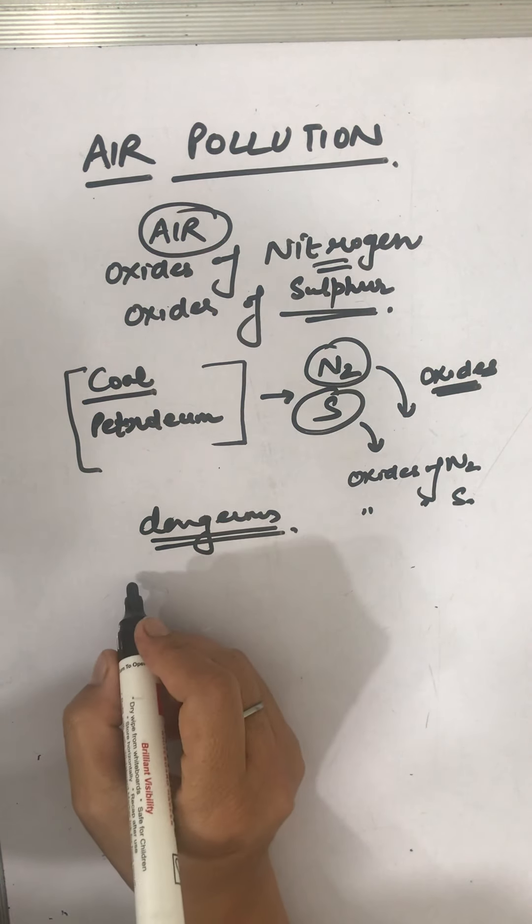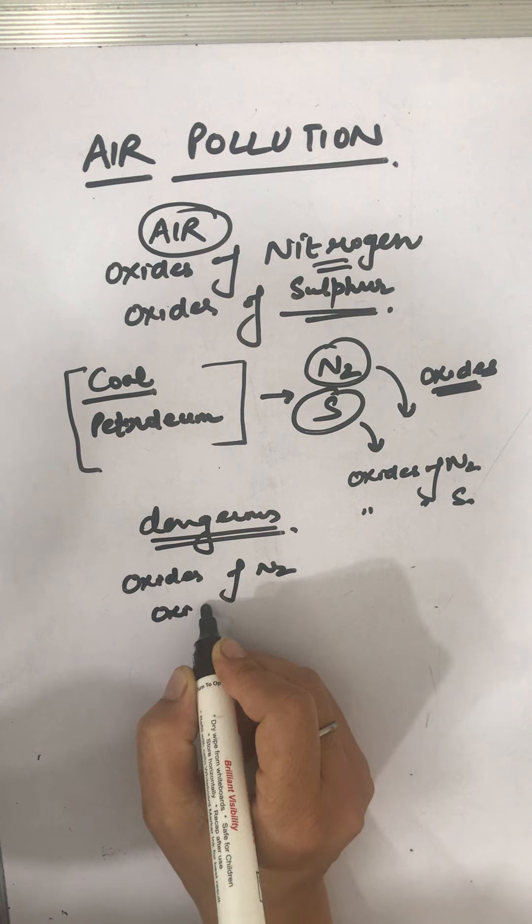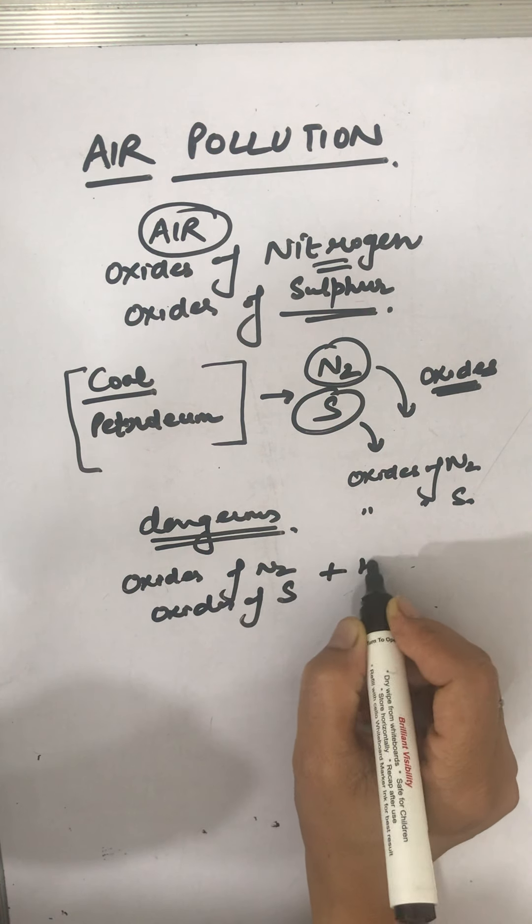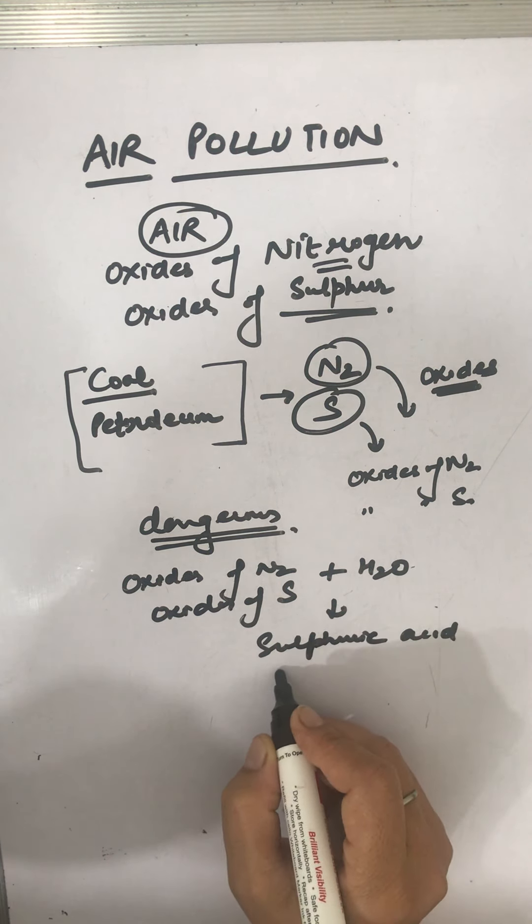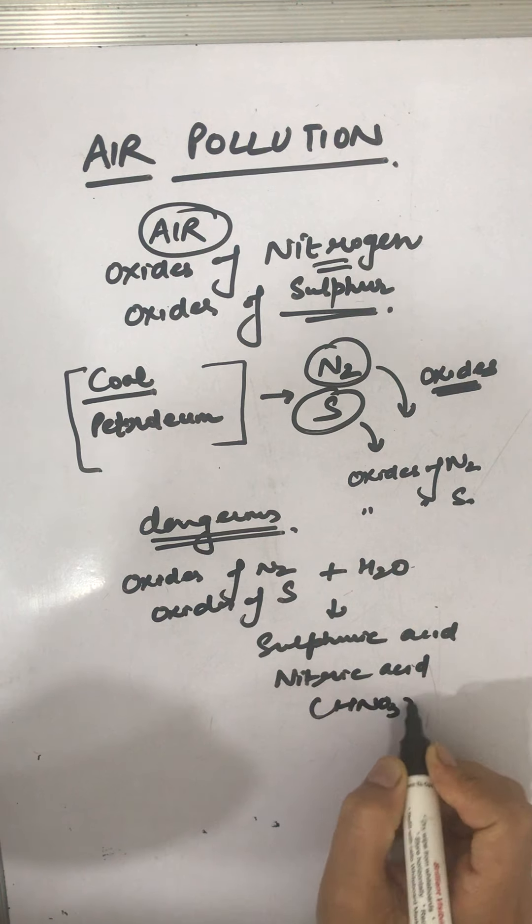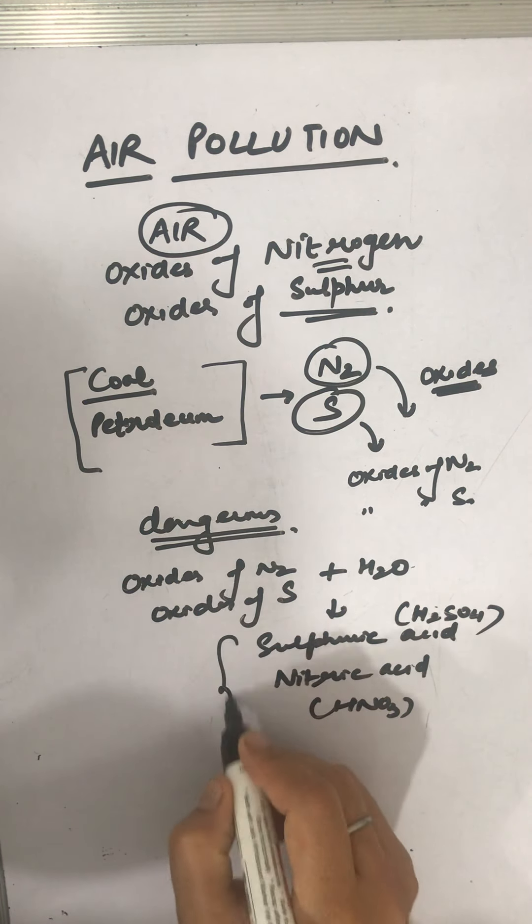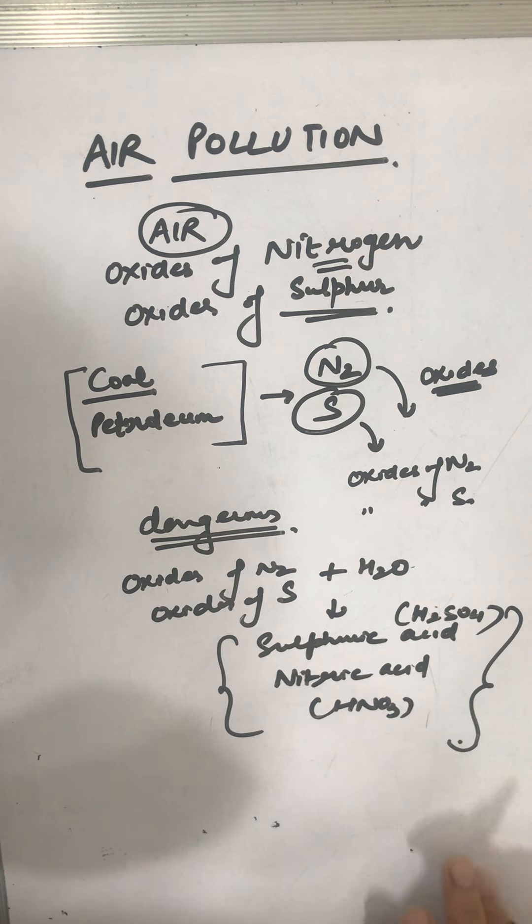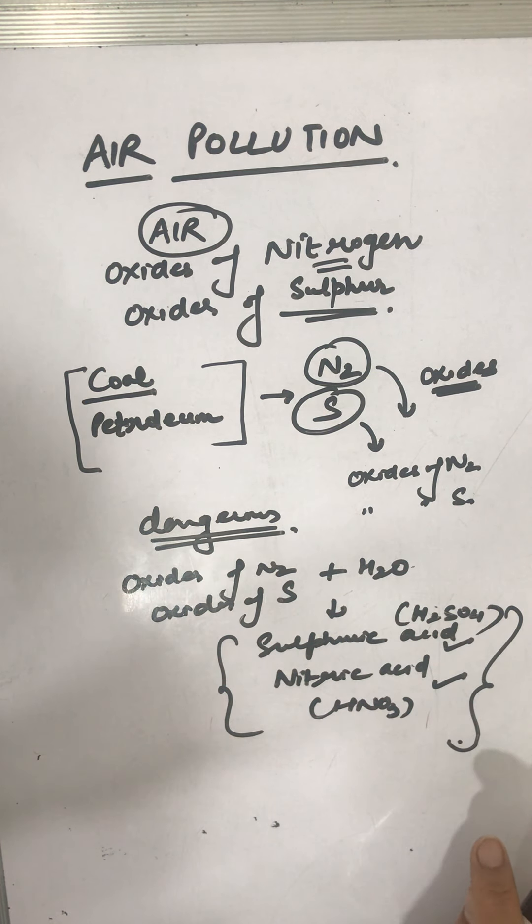Another aspect is whenever these dissolve in water - the oxides of nitrogen and oxides of sulfur - these mix with water to form sulfuric acid and nitric acid. This is how these are dissolved in rain to give rise to acid rain. These oxides are mixed with water and fall down in the form of an acid. This acidic formation is sulfuric acid and nitric acid.